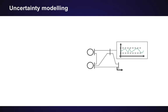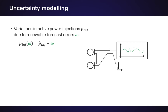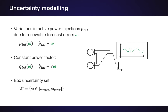In our formulation, we have a system where some bus has an uncertain generator. We model variations in active power injections due to renewable forecast errors as a green variable omega — the total injection from a renewable energy source is modeled as a forecasted value p plus omega. We assume uncertain injections have a constant power factor, so the ratio between active and reactive power remains constant, and that our omegas lie in a box uncertainty set.